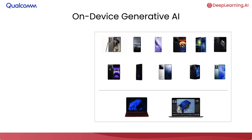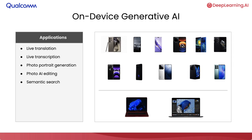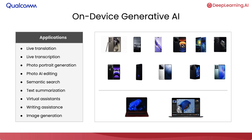On-device AI is also extremely popular for generative AI applications. This includes things like live translation, live transcription, photo generation, AI-based photo editing, semantic search, text summarization, various virtual assistants, writing assistants, as well as image generation. All of these are commercially deployed applications of on-device AI on your smartphone or laptop.